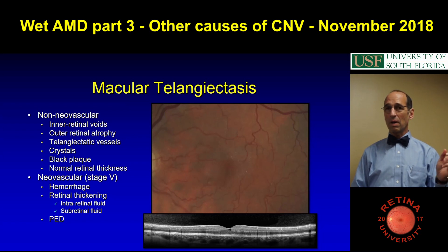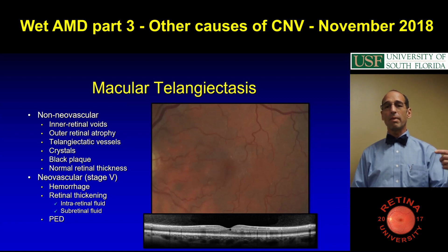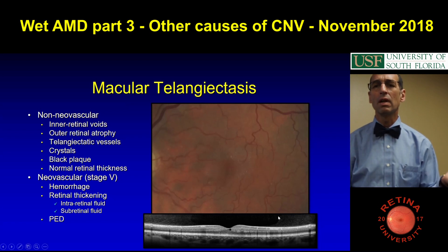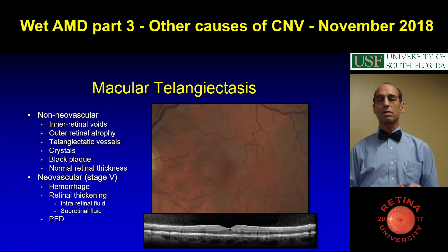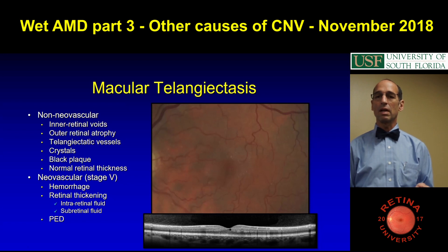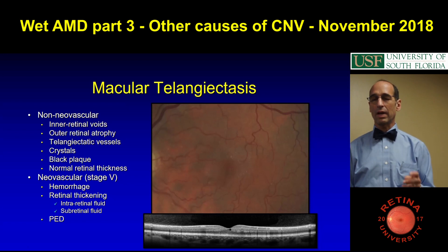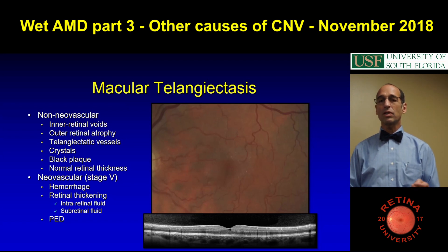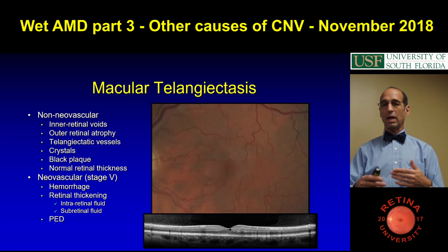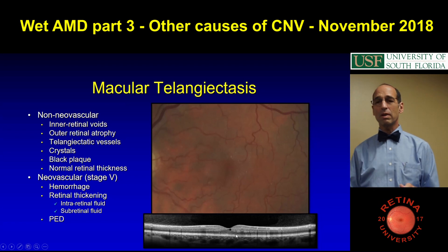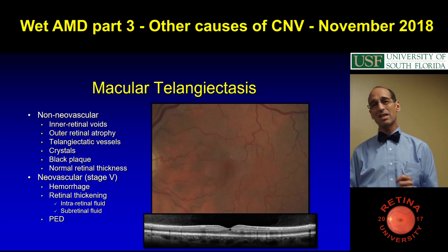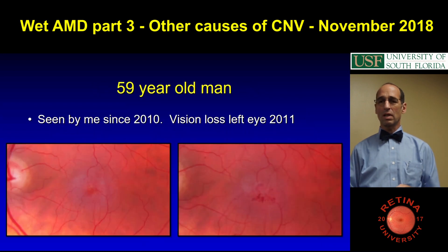Mactel can be very subtle. And once they develop a neovascular membrane, it can be hard to tell it's Mactel unless you look at the other eye, which usually has something. In non-neovascular Mactel, they have the voids on the OCT as typical, some outer retinal atrophy, telangiectasia, crystals. Sometimes they'll get a black plaque temporal to the fovea, and normal retinal thickness — so they're not central serous or anything like that. When they get neovascular, you'll see the hemorrhage, retinal thickening, and a PED. I don't get ICGs on them — I guess you would see leakage on fluorescein.